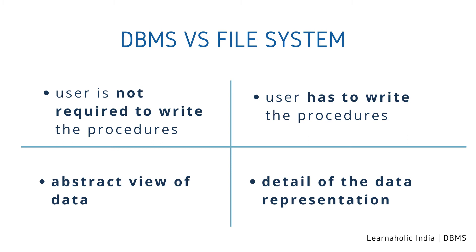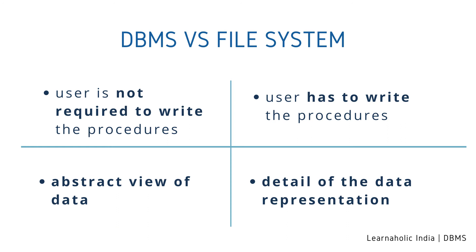Now let's see the difference between DBMS and file system. First: DBMS is a collection of data where the user is not required to write procedures, whereas in a file system the user has to write the procedures for managing the database. Second: DBMS gives an abstract view of data that hides the details, whereas a file system provides the details of data representation and storage.